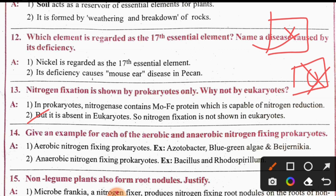The 14th question is: give an example for each of the aerobic and anaerobic nitrogen-fixing prokaryotes. Aerobic nitrogen-fixing prokaryotes include Azotobacter and blue-green algae. Anaerobic nitrogen-fixing prokaryotes include Bacillus and Rhodospirillum.